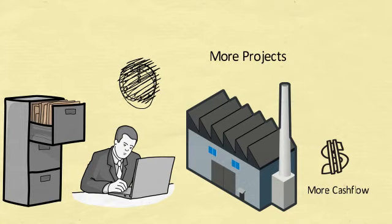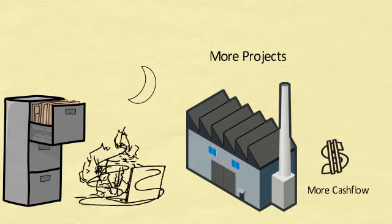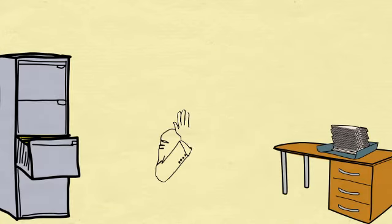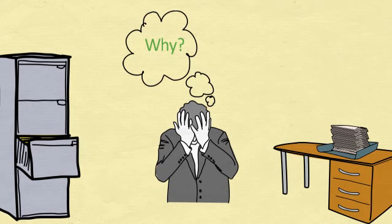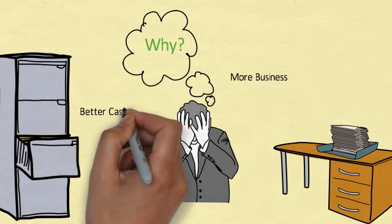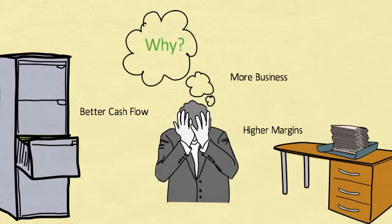However, James was spending nearly all his time on the business and becoming even more stressed and less happy. Something was definitely wrong. He just couldn't figure out why this was happening. Shouldn't more business, better cash flow and higher margins mean a happier James with more time on his hands?